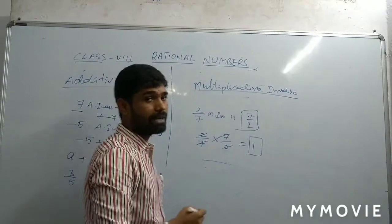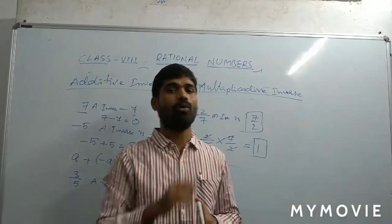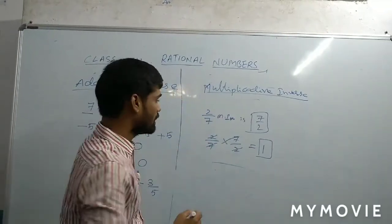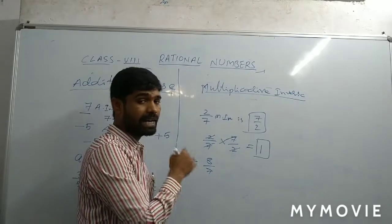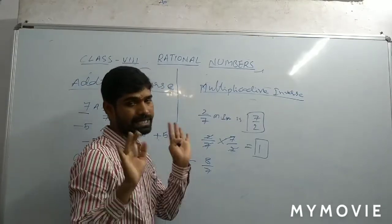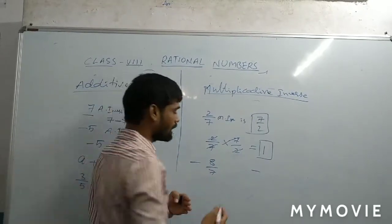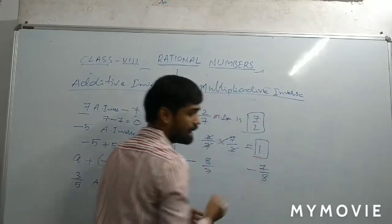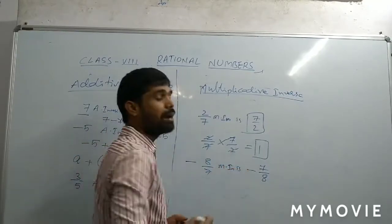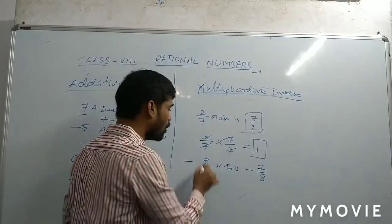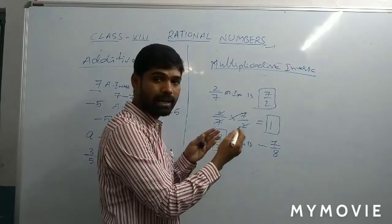A rational number and its multiplicative inverse — the product is equal to 1. For example, minus 8 by 7: the symbol stays as is, only the value is reciprocal. So we take minus 7 by 8. Thus, minus 8 by 7 multiplicative inverse is minus 7 by 8. The rational number A by B should become B by A — that is the multiplicative inverse.